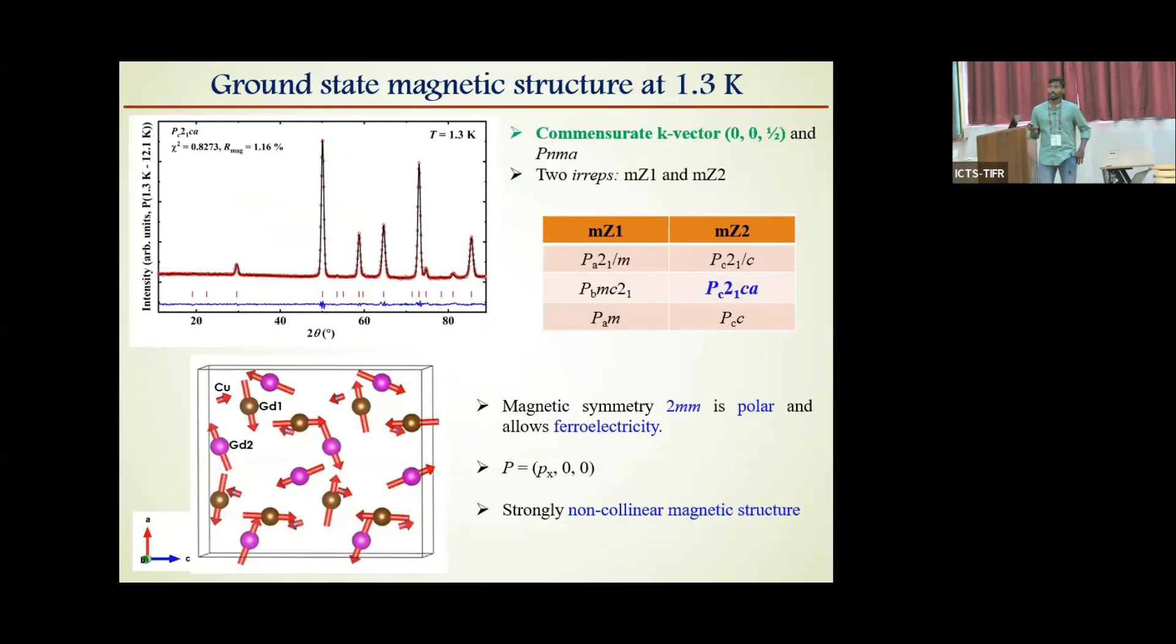Firstly, we have analyzed the magnetic structure at 1.3 Kelvin, which is below lock-in transition, corresponding with the commensurate K vector (0,0,½) and paramagnetic space group Pnma. There are six possible magnetic solutions corresponding to irreducible representation, and the correct solution found to be Pc21Ca, which is polar and allows ferroelectricity with polarization along x direction. And the obtained magnetic structure is shown here, which is strongly non-collinear.